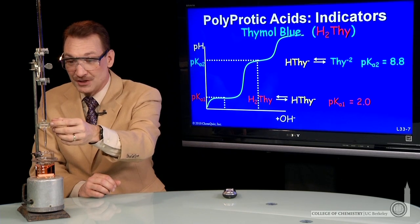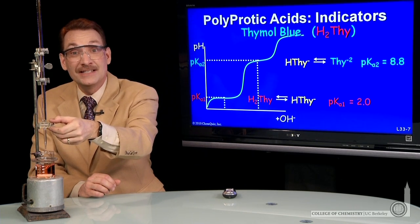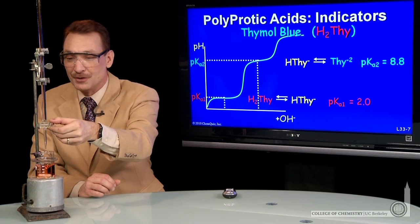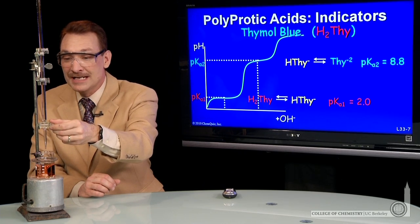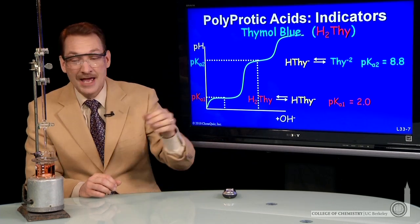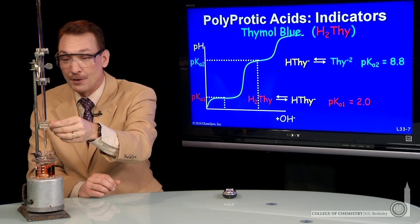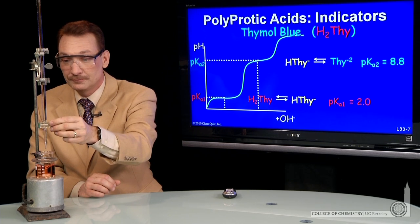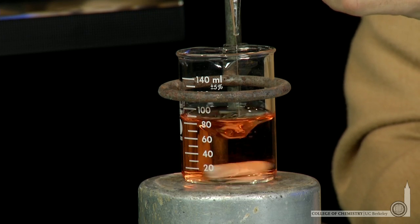So around pH 2, as we add base now from this burette, we'll increase the pH, and we'll see the various colors for thymol blue. So I'll begin the addition of base.